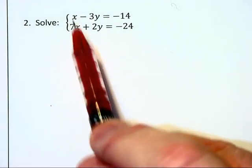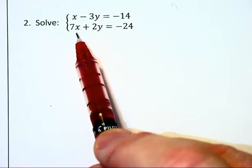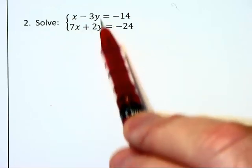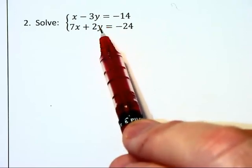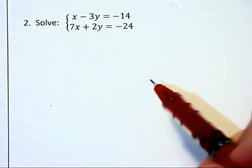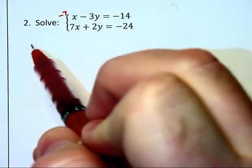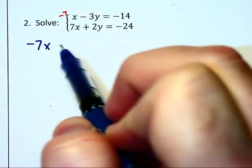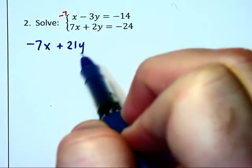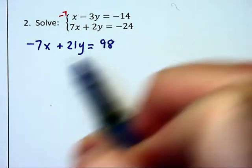We could cancel out x's if this was a negative 7x and a positive 7x and we could cancel out the y's if each of them were 6's, positive 6 and negative 6. So what I'm going to do is I'm going to multiply that first equation by negative 7 and we're going to have negative 7x plus 21y is equal to positive 98.